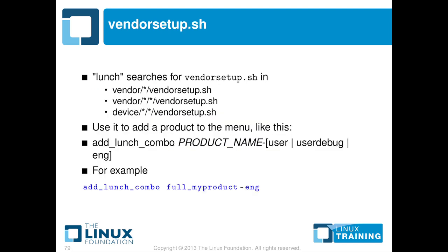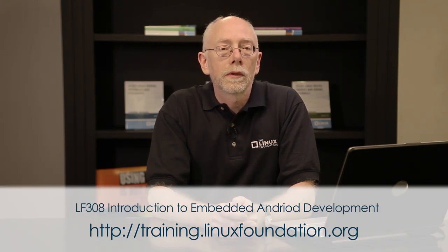And then the last one I want to look at is one called vendor_setup.sh. This just has the one-liner: add_lunch_combo, the name of the product, and then dash eng. So that was an excerpt from LF308, Introduction to Embedded Android, and we look forward to seeing you in the course soon.